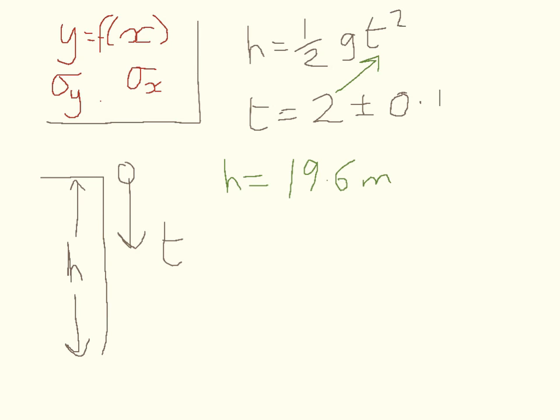But now, let's try putting in 2 plus 0.1. So now we have half g times 2.1 squared, and that gives us a value of 21.6.